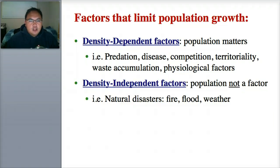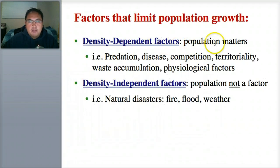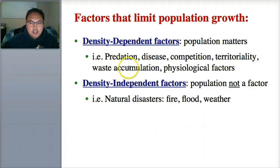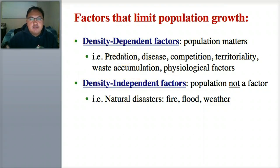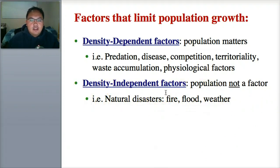Here are the factors that limit population growth. Density-dependent factors are those where growth is limited because of the density of the population — predation, disease, competition, territoriality, waste accumulation, and physiological factors. These are much worse when the population is dense. Density-independent factors are those where population size is not a factor — basically all natural disasters: fire, flood, tornadoes, weather. Natural disasters affect a population no matter how big or dense it is.